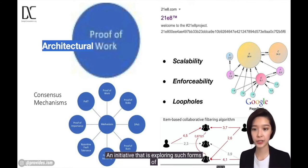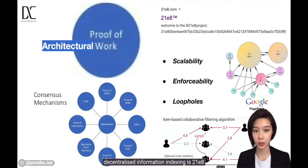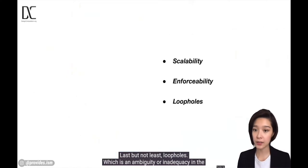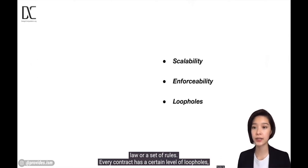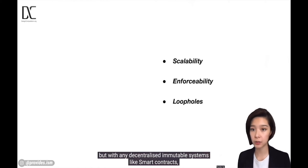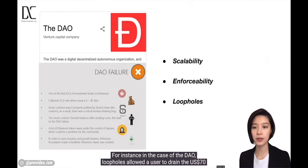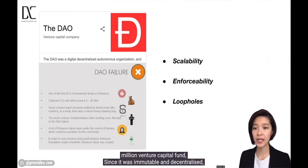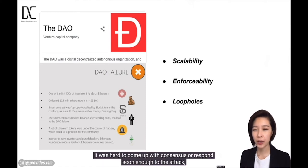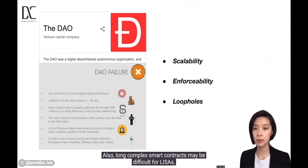An initiative exploring such forms of decentralized information indexing is 21E8. Last but not least, loopholes — an ambiguity or inadequacy in the law or set of rules. Every contract has a certain level of loopholes, but with any decentralized immutable system like smart contracts, when everything is packed into one long and complex agreement that automates all transactions, it basically multiplies all the risks together. For instance, in the case of the DAO, loopholes allowed a user to drain a 70 million US dollar venture capital fund. Since the network was immutable and decentralized, it was hard to come up with consensus or respond soon enough to the attack. Also, long complex smart contracts may be difficult for leases as they usually work in a more adaptive and responsive manner.